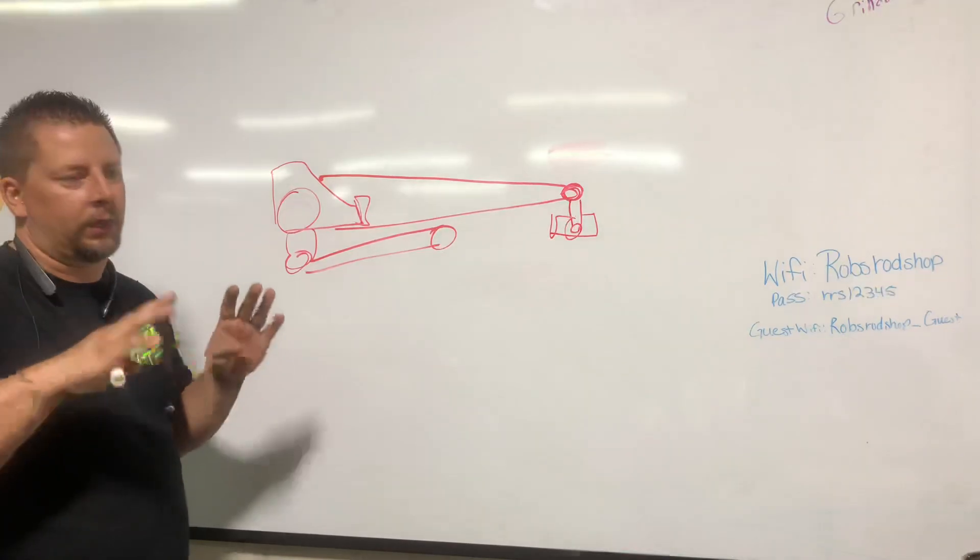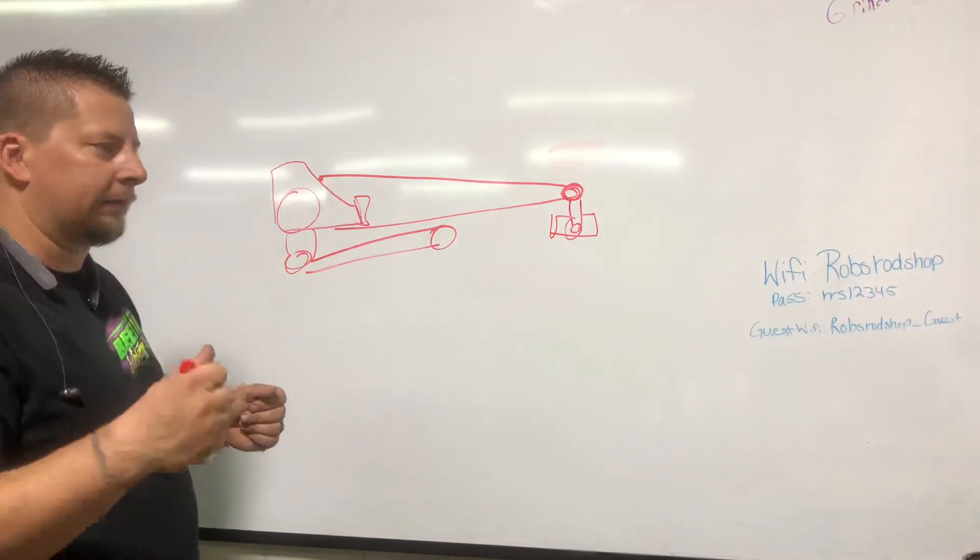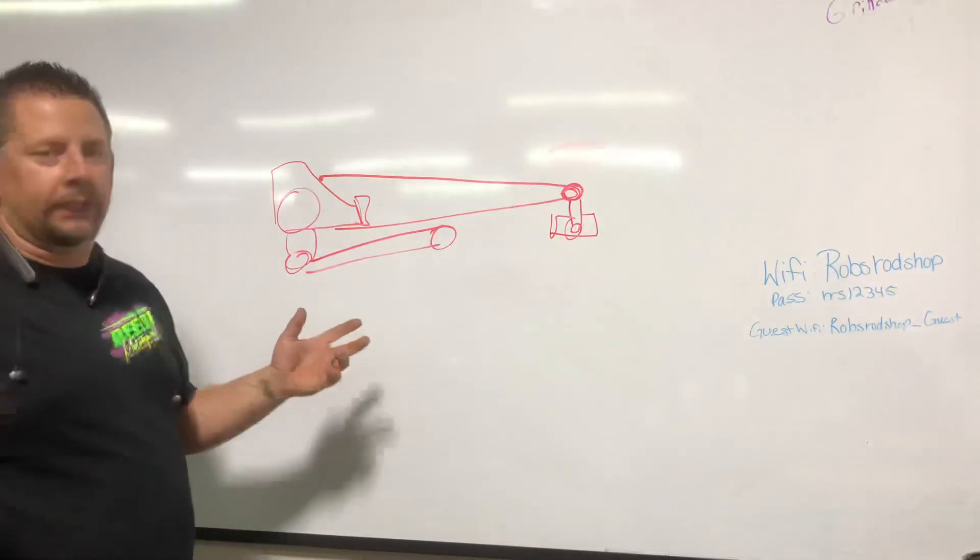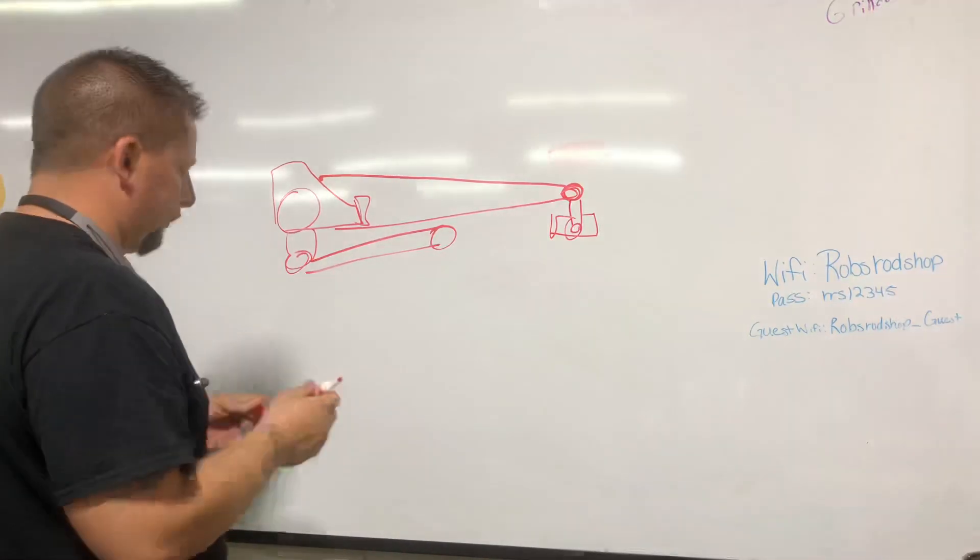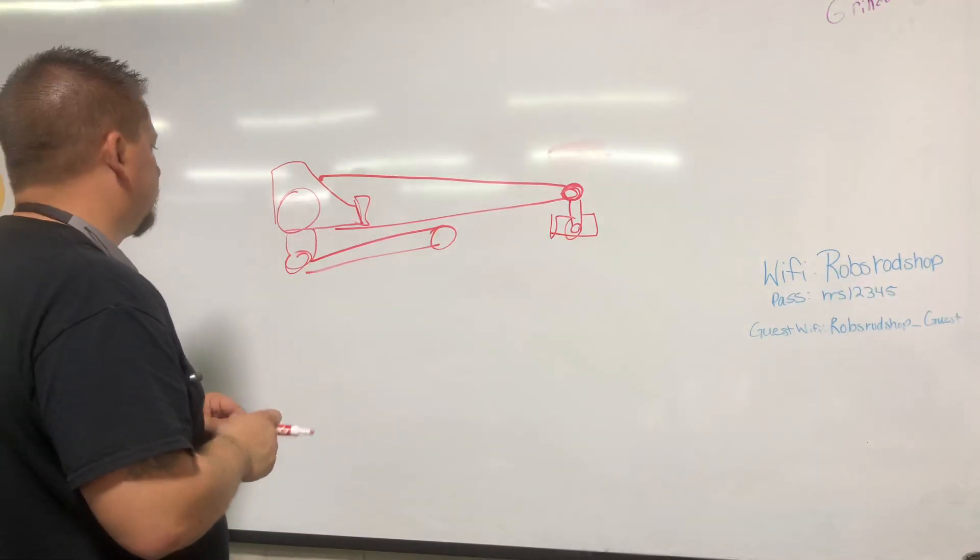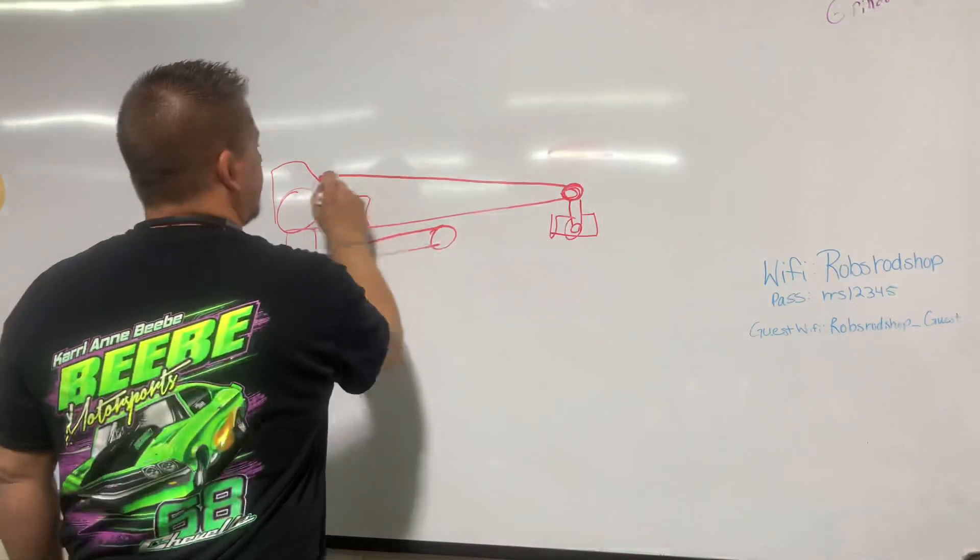So that way when you come out of a corner and you stab it, the car doesn't do anything funny and act weird. And it works really good for road racing. But in a drag racing application, the majority of what you're going to do is in this lower control arm, because this can still move—it still wants to drive the rear end forward.